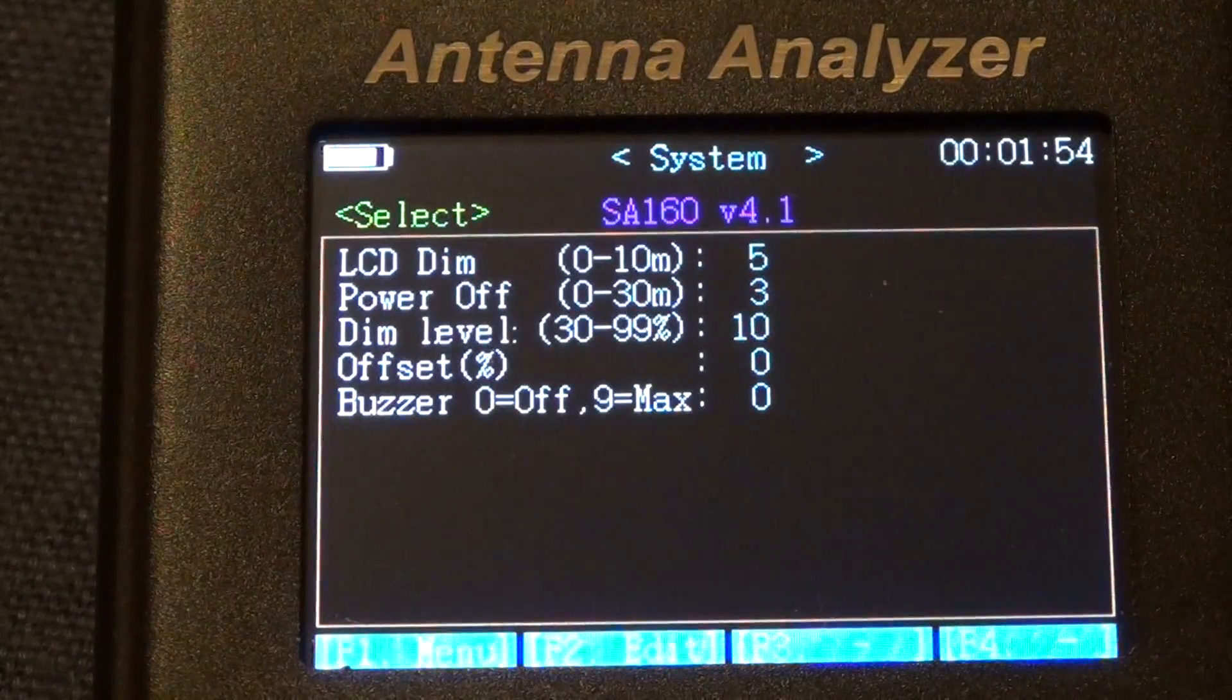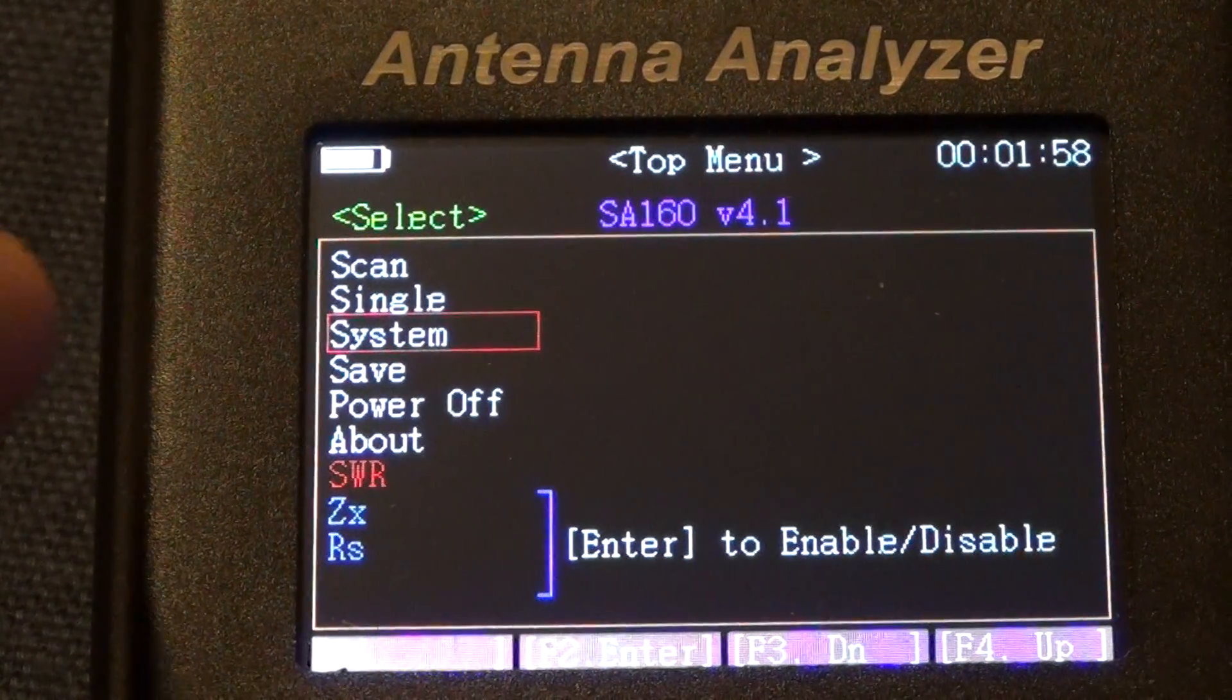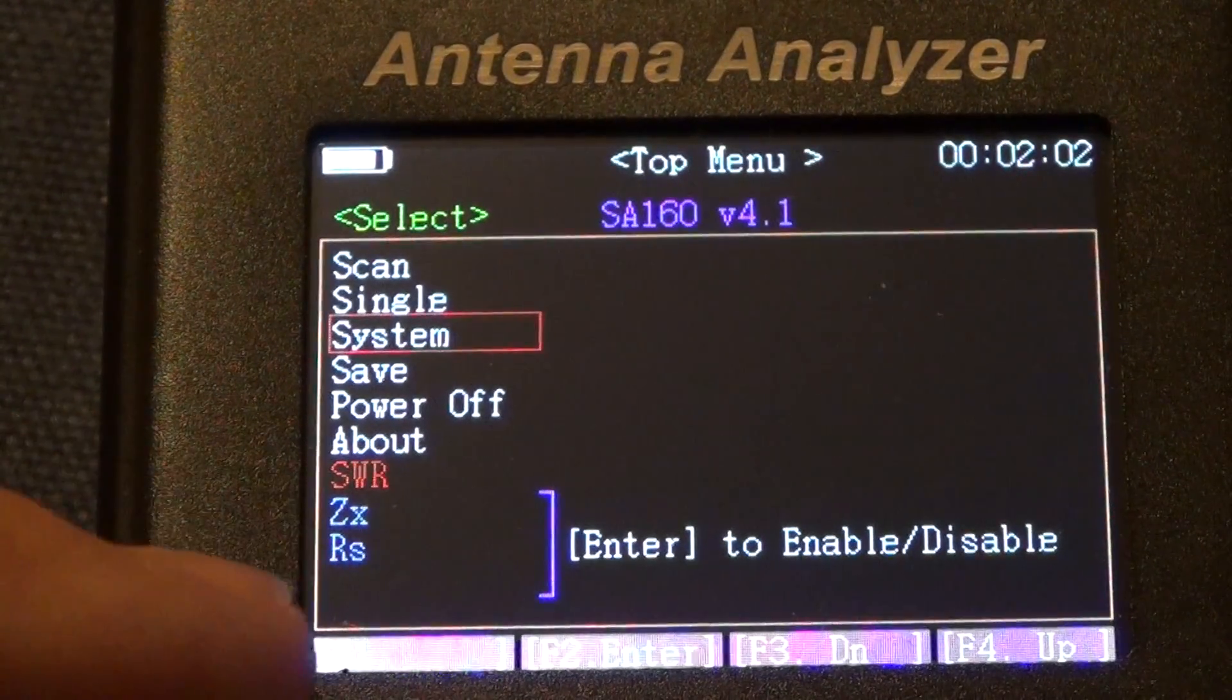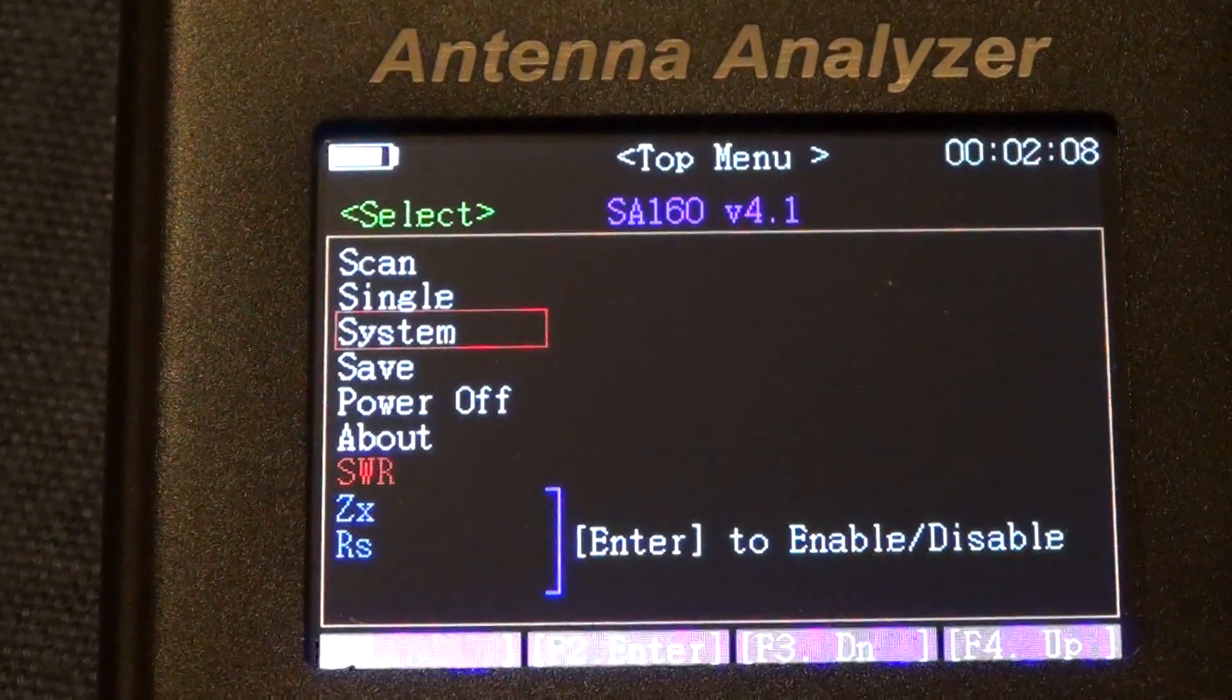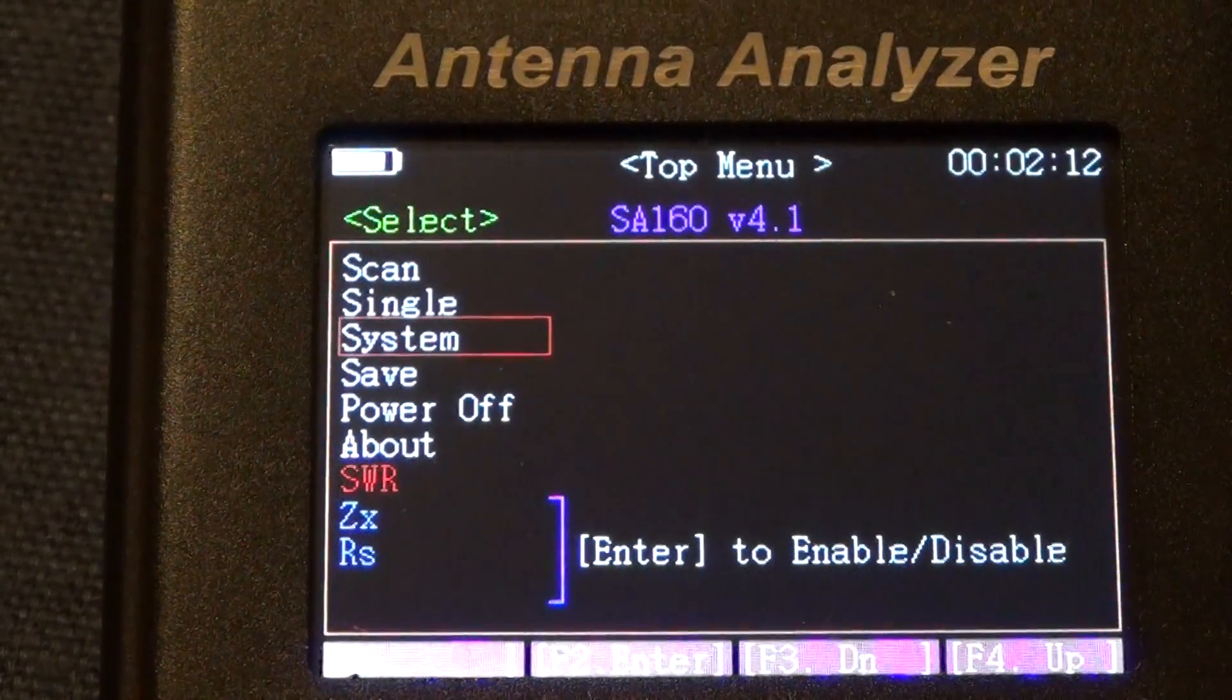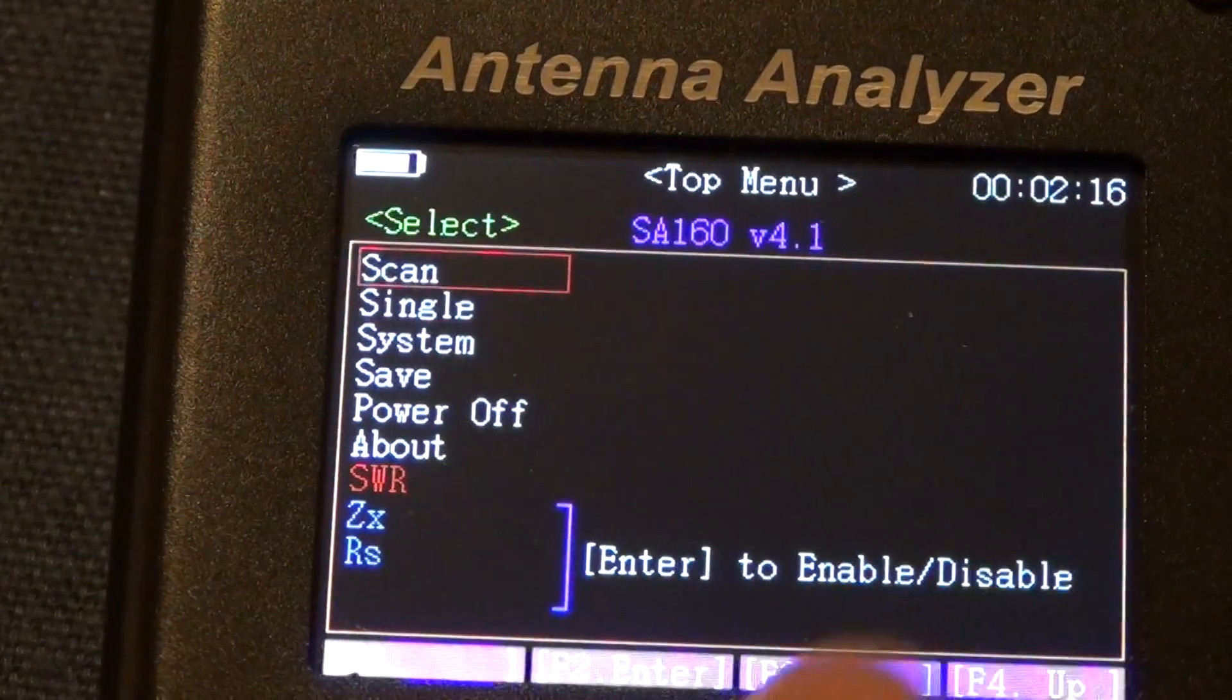For the better, I shut off any beep or noise or sound. If you like the confirmation beeps, you can set it up, no problem. Let's go back here to my menu again. You can also enable or disable as you can see this SWR. It's enabled, but you also have the impedance and the resistance that can be enabled or disabled to be shown together. So let's say I just like to do a quick scan or a full scan if you will. Let's go to scan.